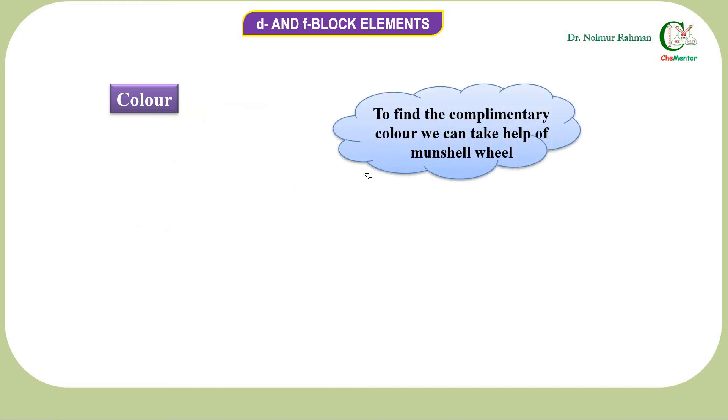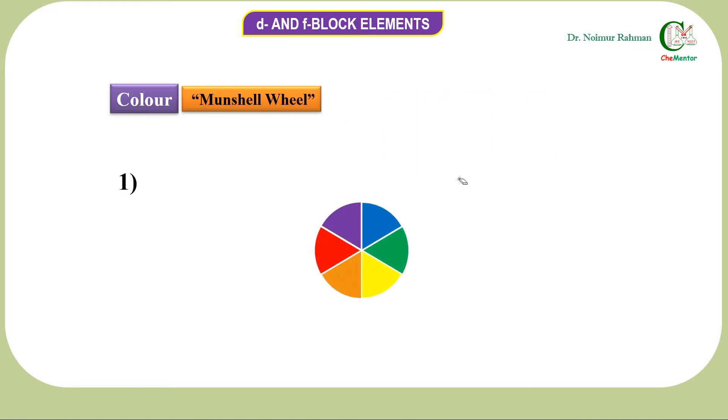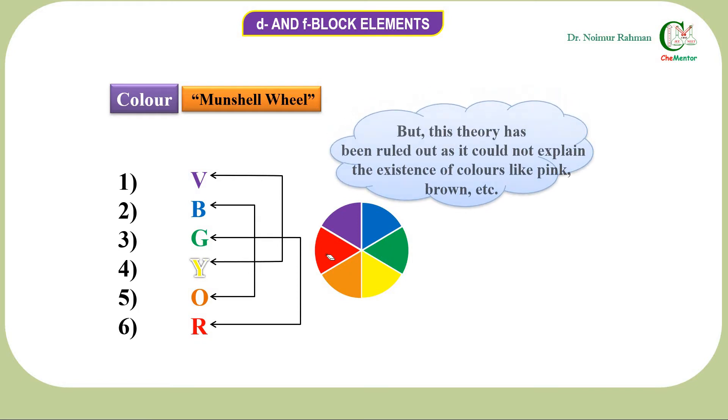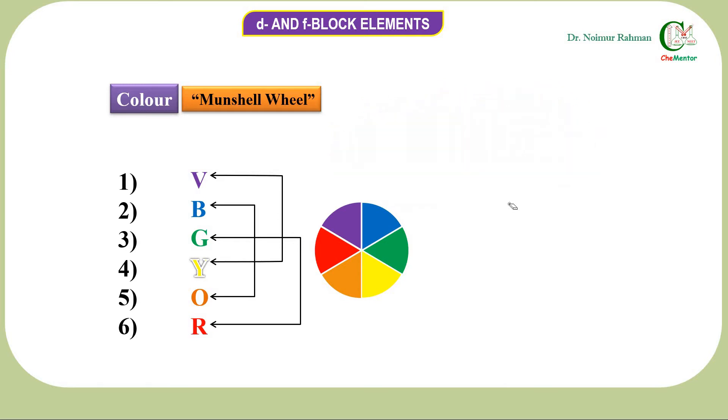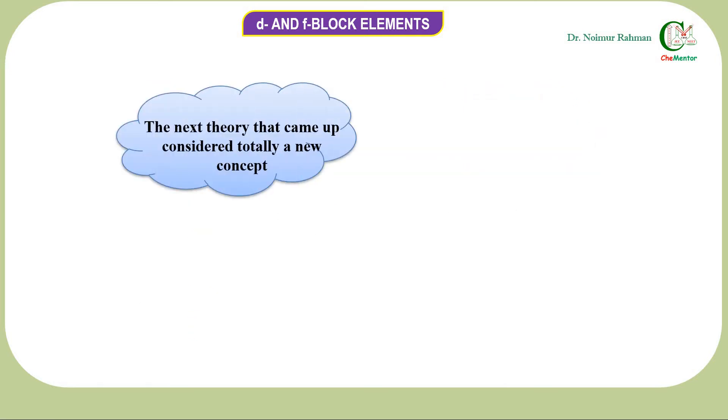This substance is absorbing light, and the complementary color is reflected. That's why we see the color complementary to the absorbed color. To find the complementary color, we can take the help of Munshell Wheel. It tells you that purple is complementary to yellow, blue to orange, and green to red. But this theory has been ruled out as it could not explain the existence of colors like pink, brown, etc.